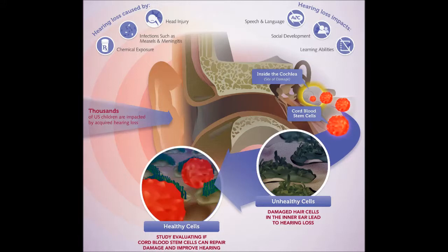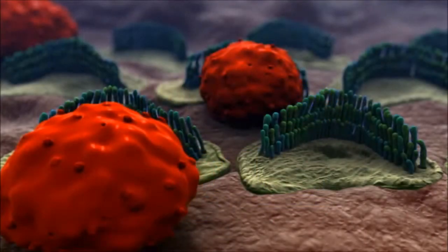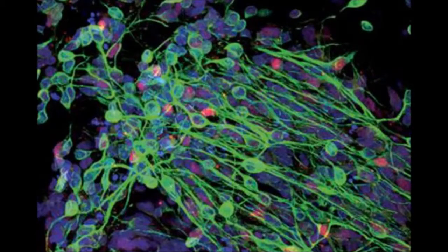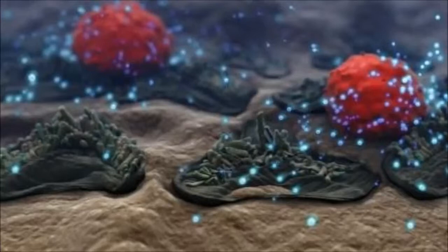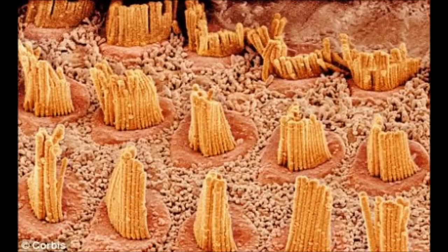Cord Blood Registry continues to lead the industry in evaluating the potential of newborn stem cells in neurological damage, supporting FDA-regulated clinical trials in autism, cerebral palsy, pediatric stroke, traumatic brain injury, and now hearing loss, underscores Heather Brown, Vice President of Scientific and Medical Affairs at CBR. We are excited to learn from the outcomes of this particular study and from future studies that may evaluate broader populations affected by hearing loss or other neurological impairments for which there are limited treatment options today.